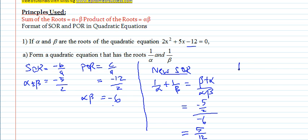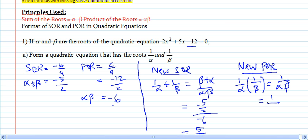Let's proceed to find your new product of the root. The new product of the root would be 1 over alpha times 1 over beta, and that's 1 over alpha beta. That gives you 1 over alpha beta is negative 6. So it's negative 1 over 6. So your new product of the root is negative 1 over 6.